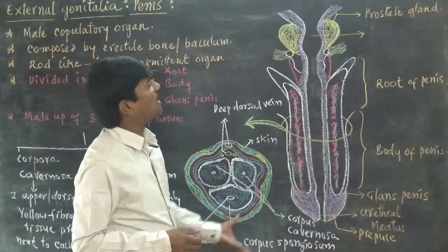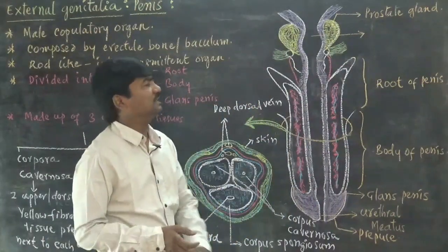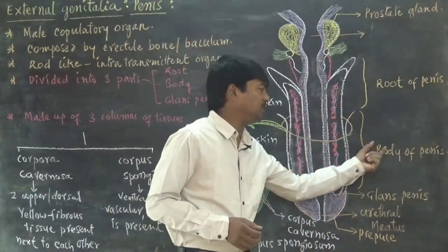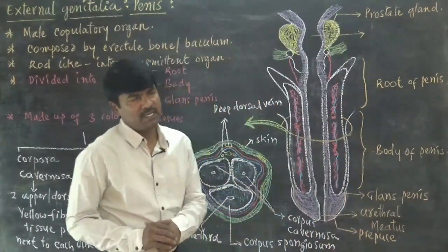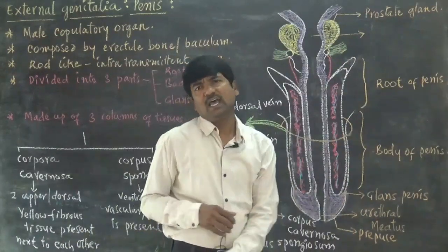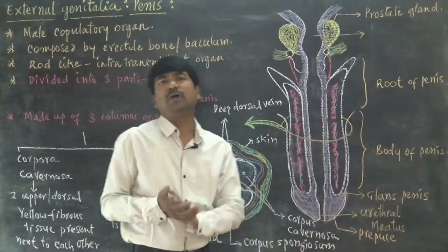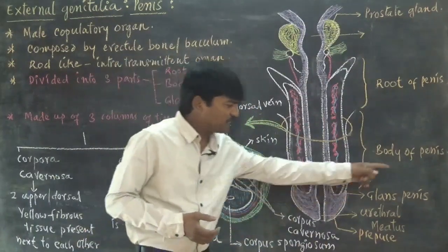External parts of penis - if you observe, we can identify three regions. That is anterior part, middle part, and posterior part. The anterior part of penis is known as root of penis, the middle part is known as body of penis, and the posterior part is known as glans penis.